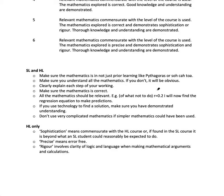All the mathematics should be relevant. Example of what not to do. R equals 0.2, I will now find the regression equation to make predictions. What's wrong with that? Well, R equals 0.2 means there's no correlation. So why would you go and make a regression equation and make predictions on something that doesn't even correlate? So that shows you don't understand what you're doing.